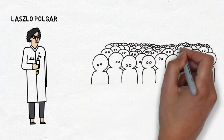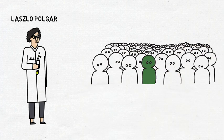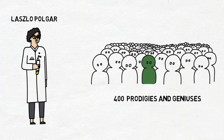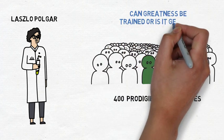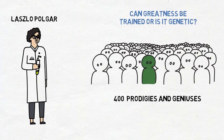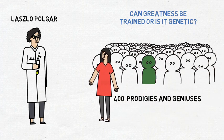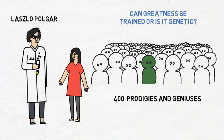He studied over 400 prodigies and geniuses to find patterns that could be repeated. Laszlo wanted to prove his theories, and with the help of a Ukrainian woman who became his wife, his experiment would involve his own children.